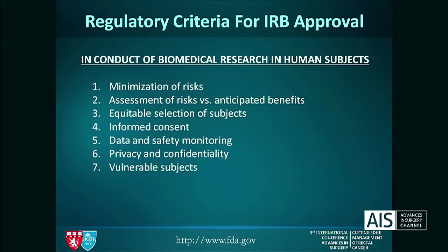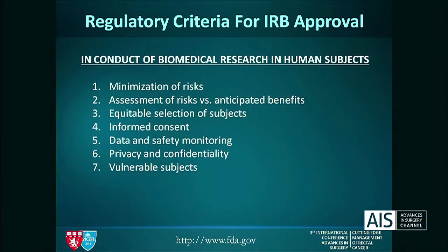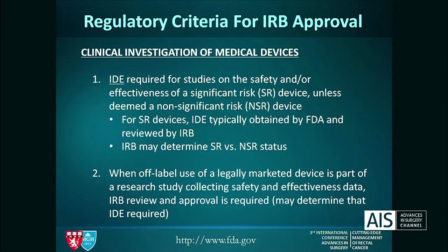IRBs follow basic rules. First, you want to minimize risks to the patients in whom research is being conducted. You also want to make sure that risks and benefits are well balanced, and that there's equitable selection of subjects with no biases in subject selection. Informed consent is critical. Data and safety monitoring while conducting human research is critical, as is protecting privacy and confidentiality of your patients, and paying special attention to particularly vulnerable populations.